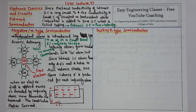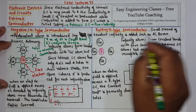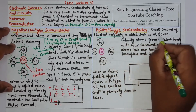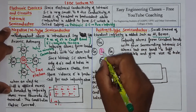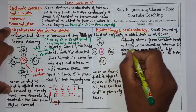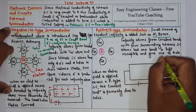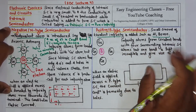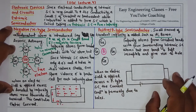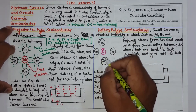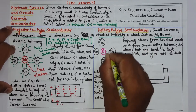Now let's look at the p-type semiconductor. In a p-type semiconductor, a small amount of trivalent impurity is added, such as aluminum or boron. What happens is that the impurity atoms form covalent bonds with four surrounding intrinsic semiconductor atoms, but one bond is incomplete — since the impurity is trivalent and only has three valence electrons — which generates a hole.